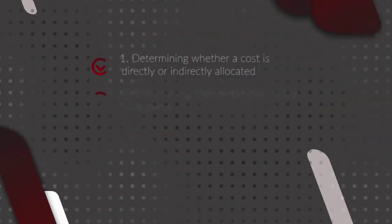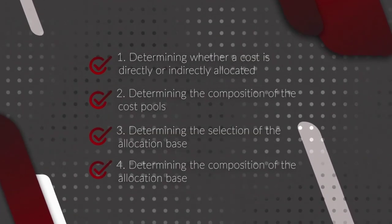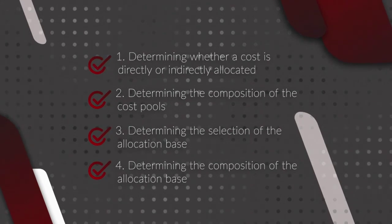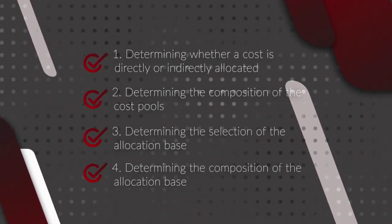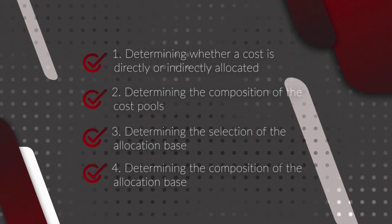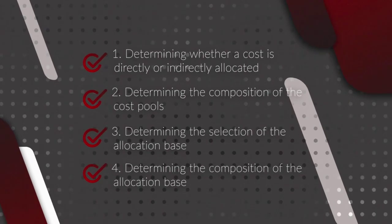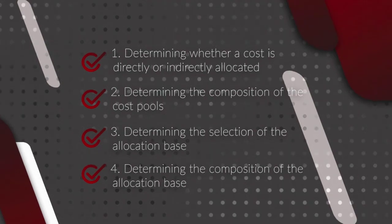A change in cost accounting practice occurs when there is a change in the method or technique for: one, determining whether a cost is directly or indirectly allocated; two, determining the composition of the cost pools; three, determining the selection of the allocation base; and four, determining the composition of the allocation base.